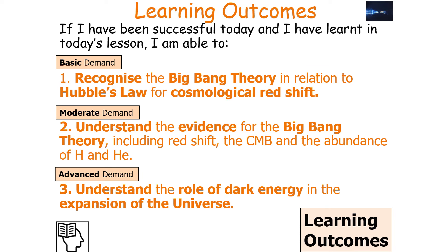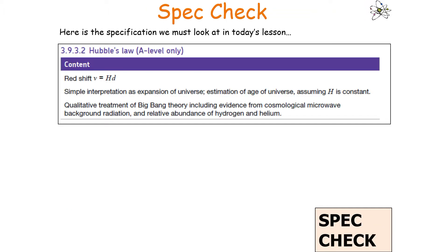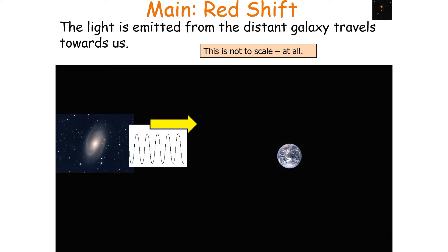If we've been successful in today's lesson, we should be able to recognise the Big Bang Theory in relation to Hubble's Law for cosmological redshift, understand the evidence of the Big Bang Model including redshift, the CMB, and the abundance of hydrogen and helium, and look at the role of dark energy in the expansion of the universe. This falls under AQA A Level Physics Specification 3.9.3.2 Hubble's Law.